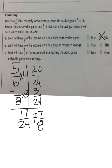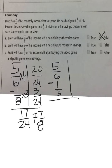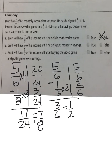Statement B: Brett will have half of his income left if he only puts money in savings. Take five-sixths and subtract one-third for savings. The LCD is six, so top stays the same; one-third becomes two-sixths. Five-sixths minus two-sixths is three-sixths, which equals one-half. Yes, Brett will have half of his income left, so statement B is true.